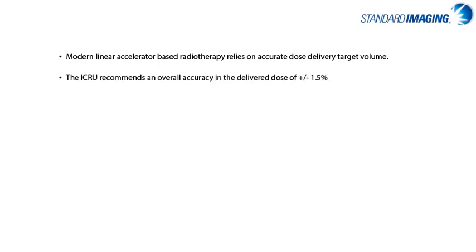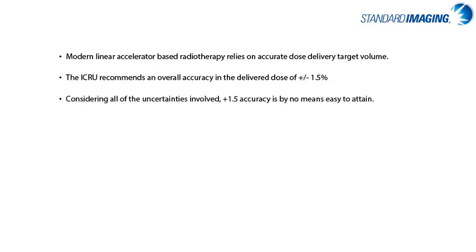Modern linear accelerator-based radiotherapy relies on accurate dose delivery to the target volume of interest. The ICRU recommends an overall accuracy in the delivered dose to the patient of plus or minus 5%, and when you consider all the uncertainties involved — beginning with those associated in commissioning of your machine, the correction factors which we have to apply to most any measurement we make, all the way up to patient positioning on a day-to-day basis — this 5% is not an easy value to achieve.